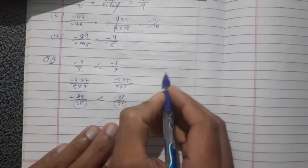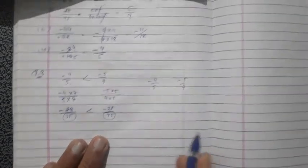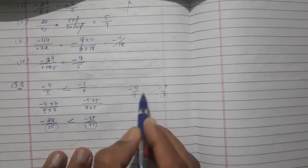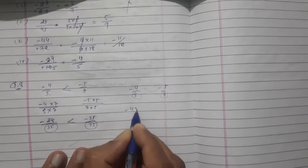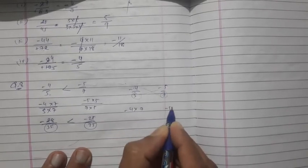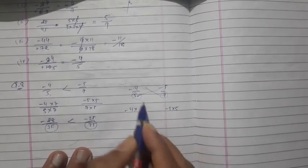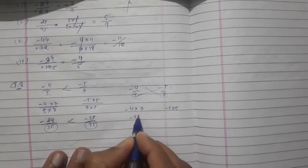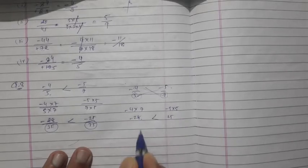Second method for the same problem — cross multiplication: take the denominators to the opposite side. Multiply 7 with 4 to get minus 28, and 5 with 5 to get minus 25. Compare: minus 28 is less than minus 25, so this one is less than.